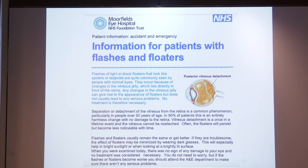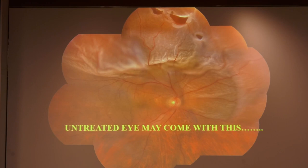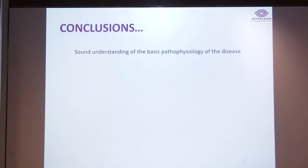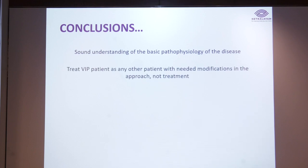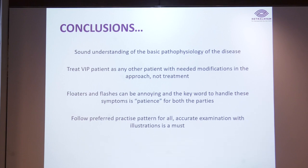This is the information booklet I give to patients, and especially for VIP patients these items from the Moorfields guideline are very handy. Sometimes a patient who is not understanding may become more cooperative when shown that if left untreated, there is a risk of losing vision. In conclusion: sound understanding of the basic pathophysiology of the disease is very important even when symptoms are mild. Treat VIP patients as any other patient with needed modifications in approach, not treatment. Accurate examination with illustrations is a must, and in very rare conditions surgery may have some benefit in persistent symptoms.